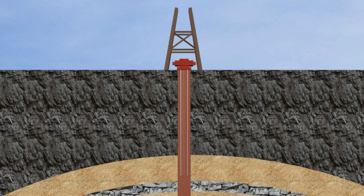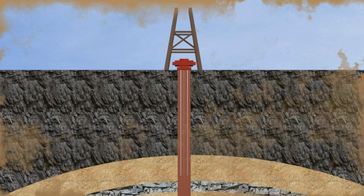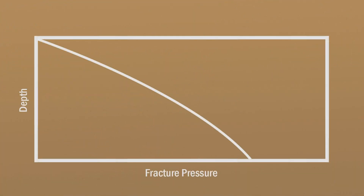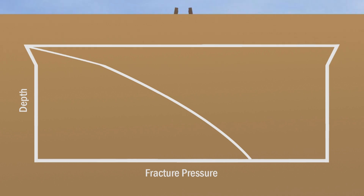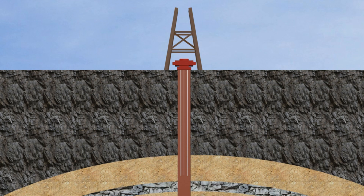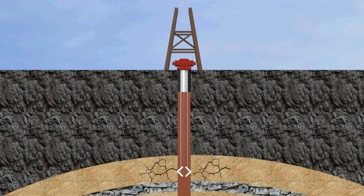Fracture pressure is the pressure at which rock will fail and cracks will be created. It depends on both rock type and depth, increasing with depth due to compaction, which makes rocks denser and harder to fracture. If fracture pressure is exceeded, cracks form and drilling fluid is lost. This loss of circulation causes a drop in the hydrostatic level and pressure, which may convert the overbalance condition into an underbalance condition — allowing formation fluids to flow into the well and cause a catastrophic blowout.